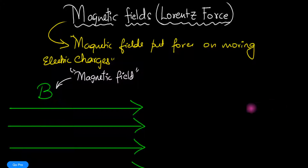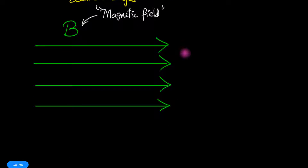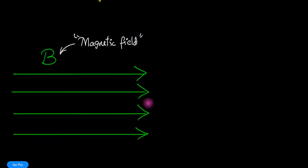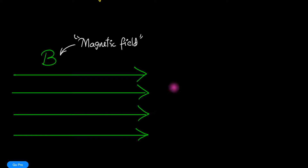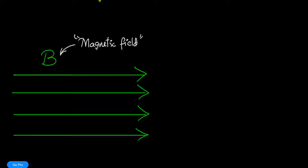So here is our magnetic field — let's move this down a little. We represent the magnetic field with B, and we don't even know what it is right now. If I were to tell you that the magnetic field is 100, you'd be as lost as I am.